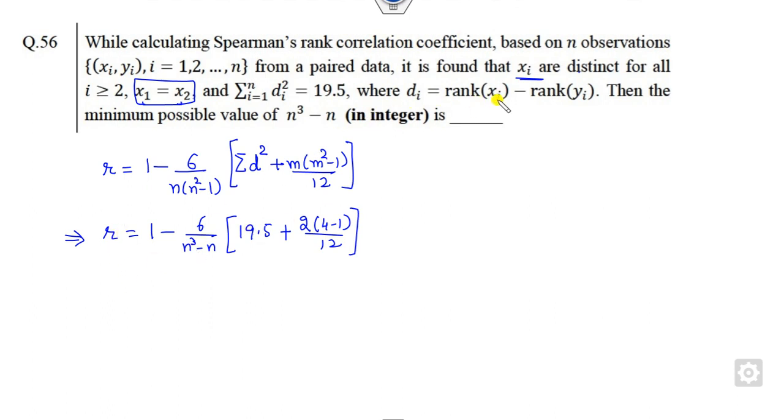r is not given to you and you have to find the minimum value of this. We all know r lies between minus 1 to plus 1. So what is the meaning of that? This number lies between here. So that is n³ - n. What is that? This is my 3, 3 will be my 4, it will be my 2.